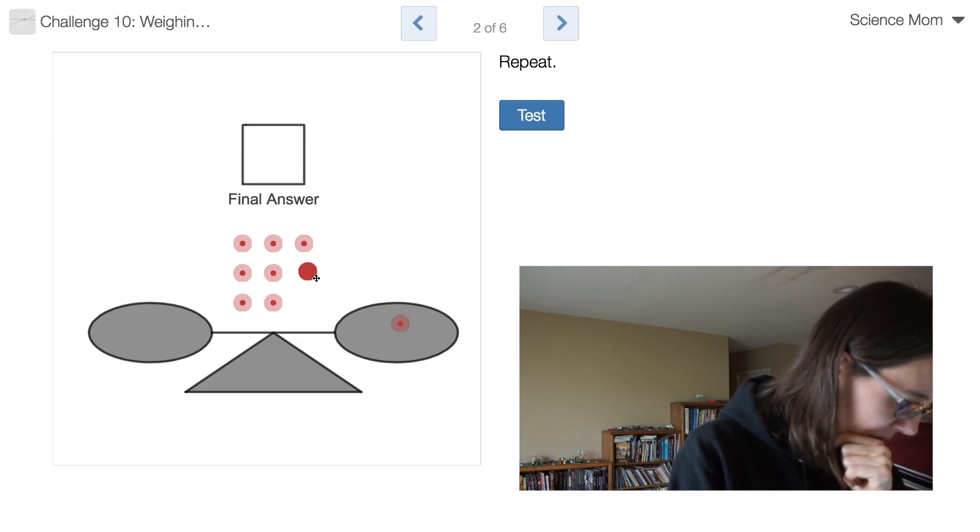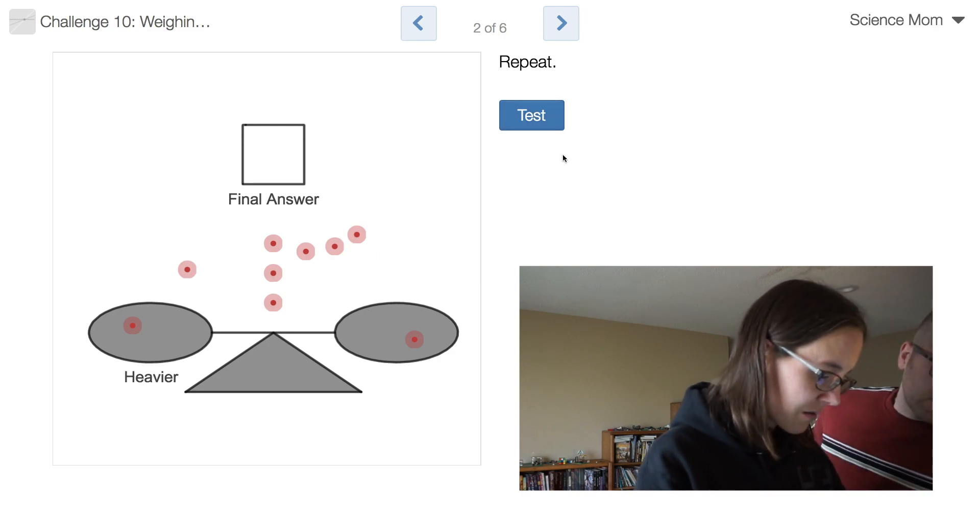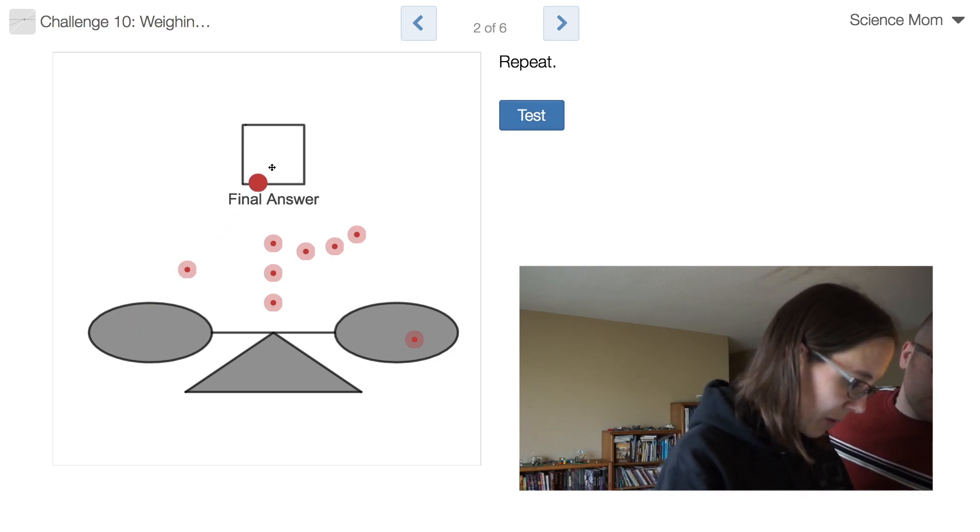But if I do three and three, I don't see how that would be any better than doing four and four, because if I test, it tells me that one's heavier, so I lucked out. Okay. So now I could just remove one of them, but if it's that one, then I'm not going to get it in two solutions. You know, so on that one, I got lucky, but if it had said that they were equal.